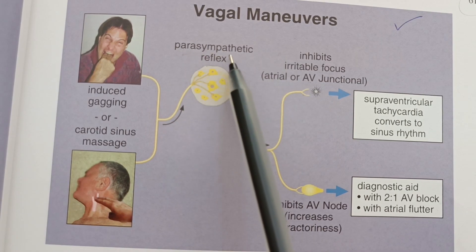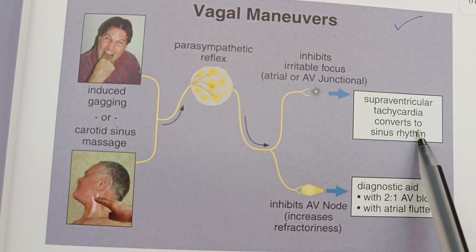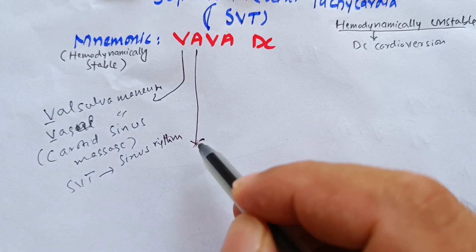Carotid sinus massage will lead to parasympathetic reflex which will convert SVT into sinus rhythm.